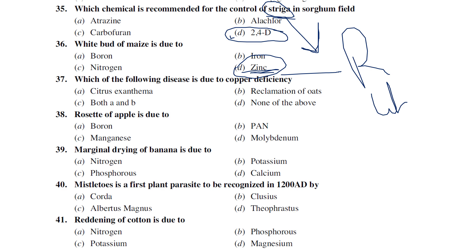Citrus exanthema is definitely caused by copper deficiency. Reclamation disease of oats is also likely copper deficiency — so the answer is both A and B. Rosette of apple is due to boron deficiency.